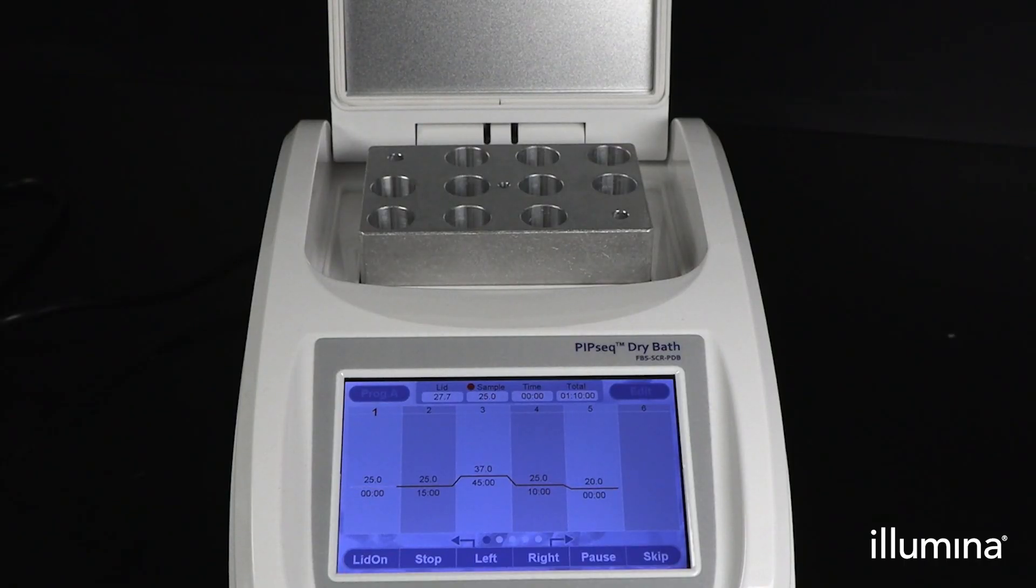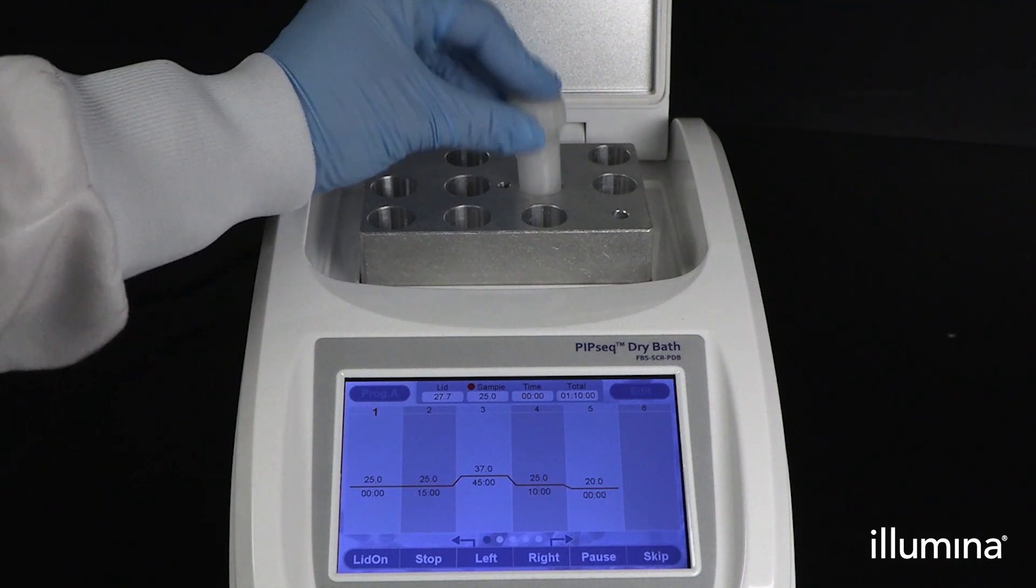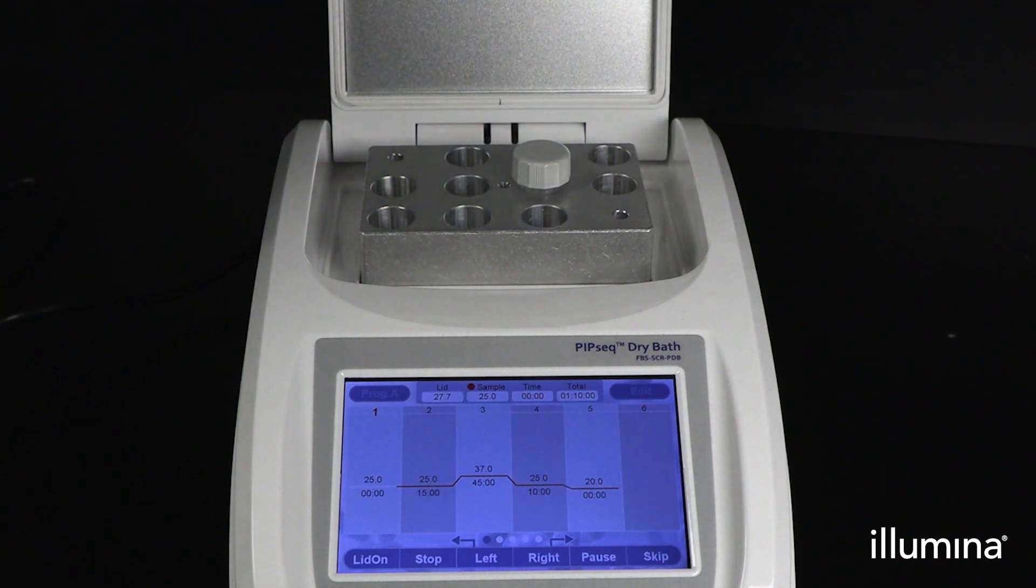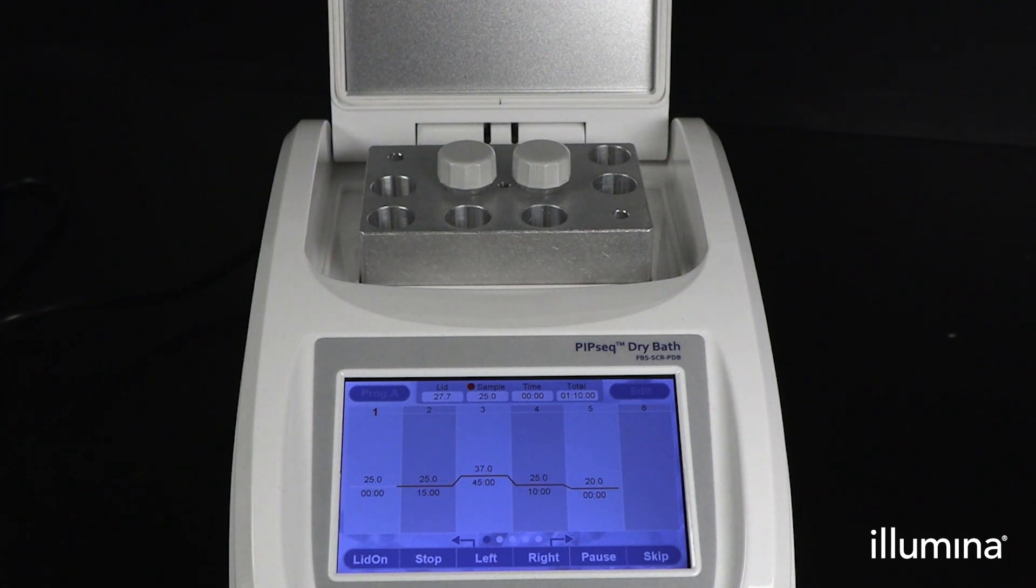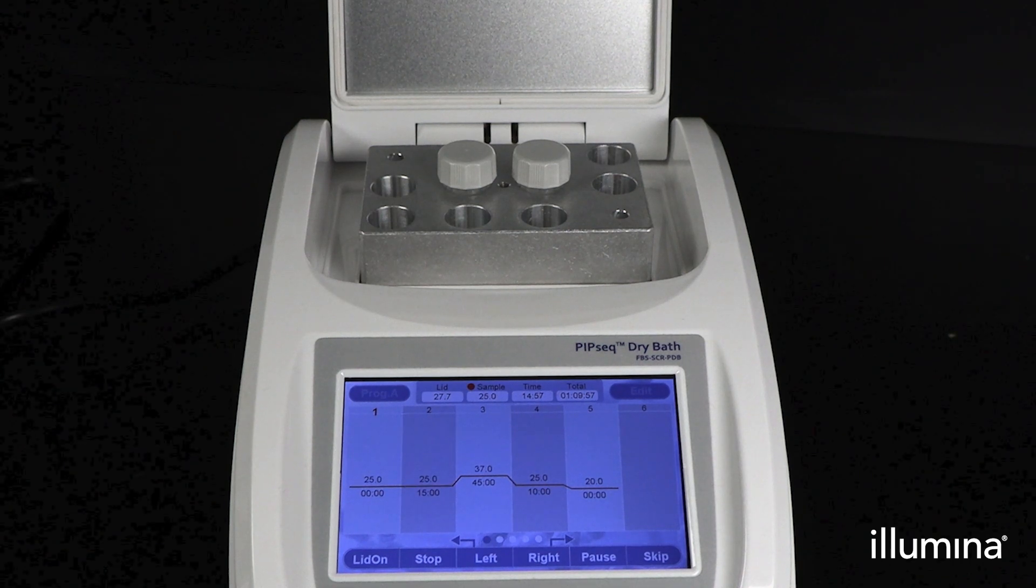Verify the PIP-Seq dry bath is preheated to the appropriate temperature for your sample type. Ensure the heated lid is off by pressing LID OFF. Then insert the samples into the dry bath and select SKIP and YES to begin the lysis incubation. Please refer to the user guide for the cell and nuclei lysis temperature profiles for this step.